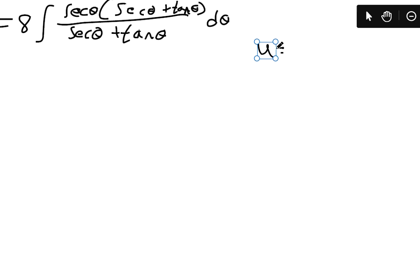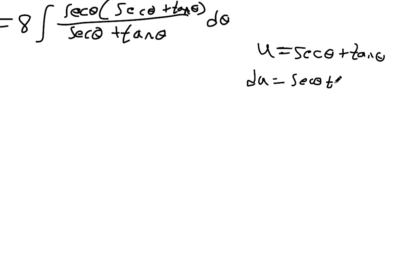If you let u equal the denominator, check out what du is going to be. The derivative of secant, that's secant theta tangent theta. And then the derivative of tangent theta, that's secant squared theta. So we actually have, if this is our u, then we have du up here. Because if you distribute, secant theta times secant theta makes secant squared theta. Secant theta times tangent theta, that makes this here. So this whole integral becomes du in the numerator,